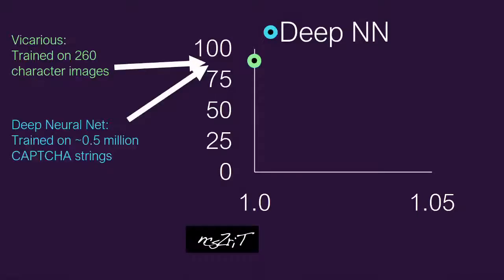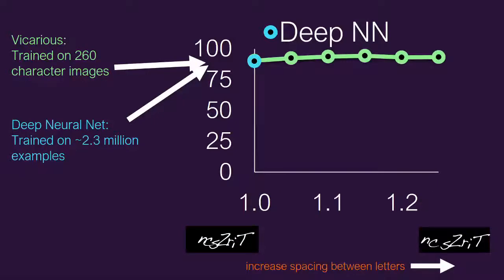I'm going to skip the next two slides. It's just comparing deep neural networks to our system, showing that our system is almost five orders of magnitude more efficient.